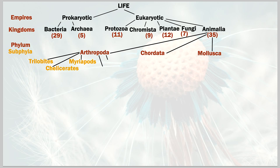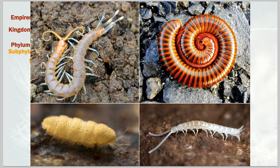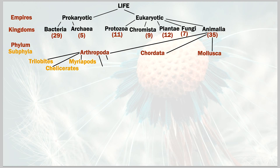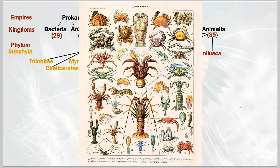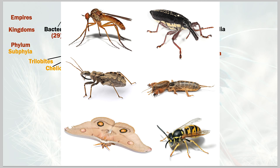The next sub-phylum is myriapods — roly-polies or pill bugs, millipedes, and different centipedes. Then crustaceans, which you've probably eaten before: various crabs, lobsters, and shrimp. The final sub-phylum for arthropods is hexapods, which represent all the insects out there and more.